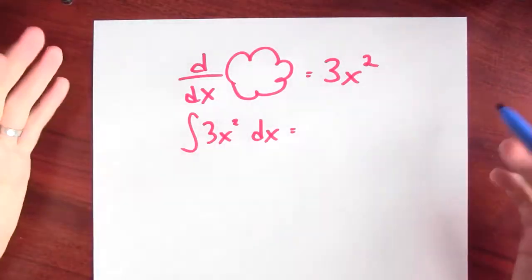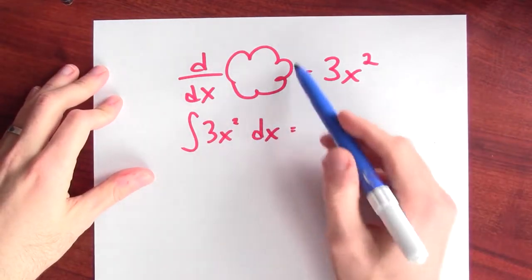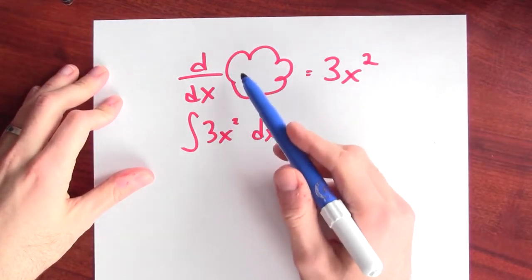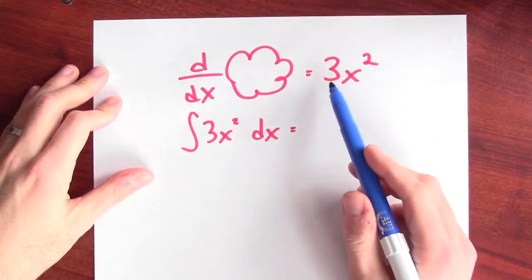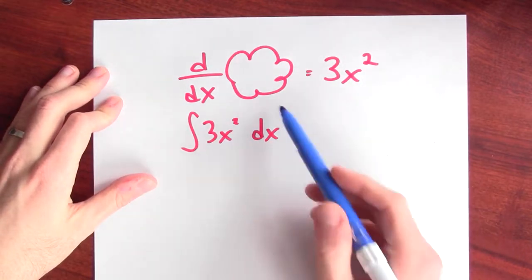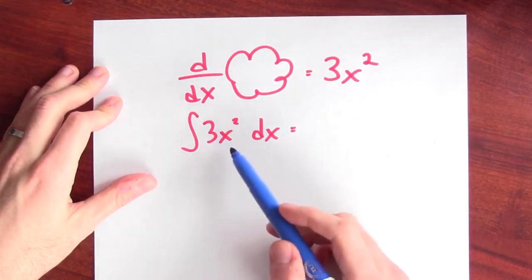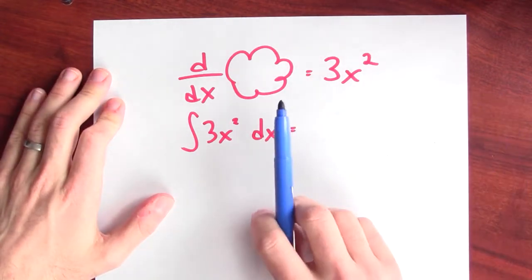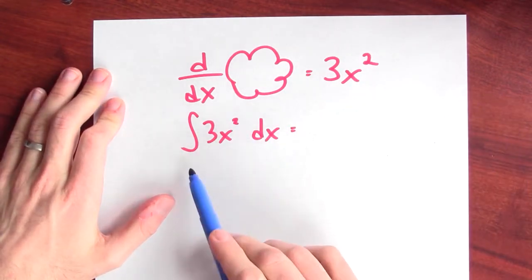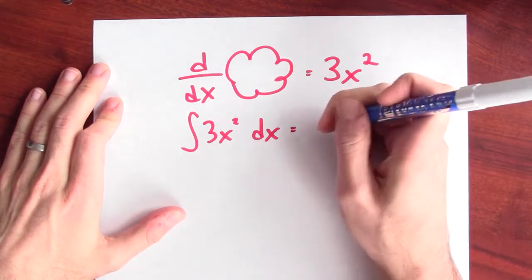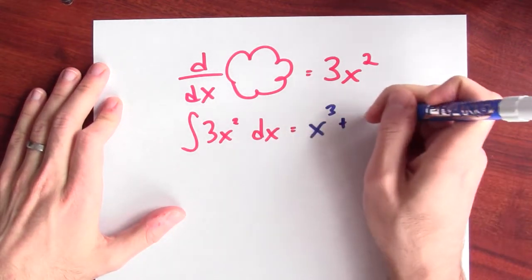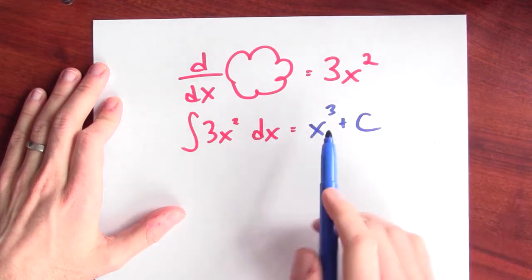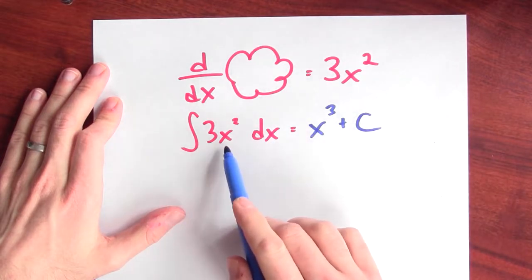We've already seen some examples where we're anti-differentiating powers of x. Here's an example: what would I have to differentiate — what goes in this cloud so that if I differentiate it, I get 3x squared? Or stated differently, what's the anti-derivative of 3x squared? Well, x cubed is an example of a function that if I differentiate it, I get back 3x squared.